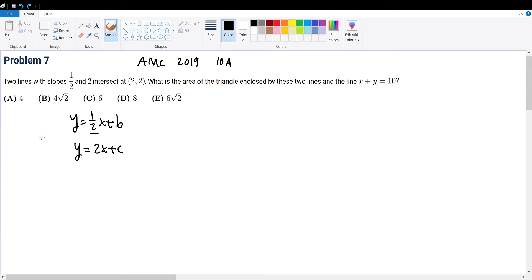Now they intersect at (2,2), meaning that the point (2,2) is part of both functions, meaning that when x equals 2 for the first function, y must equal 2, likewise for the second. So if you plug it in, 2 equals 1/2 times 2 plus b, so 2 equals 1 plus b, so b equals 1. So the first line equation will be y equals 1/2 x plus 1.